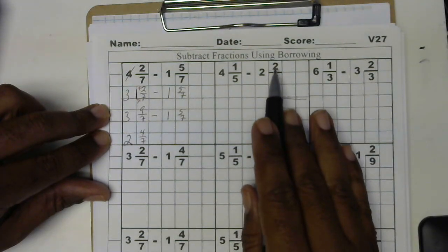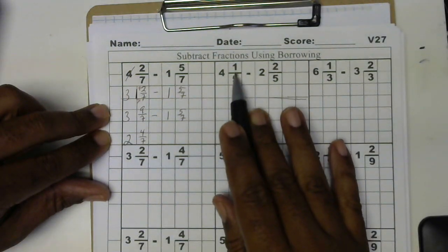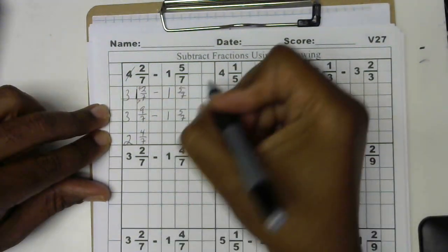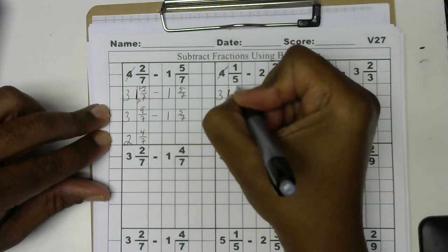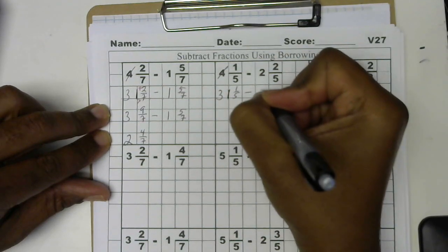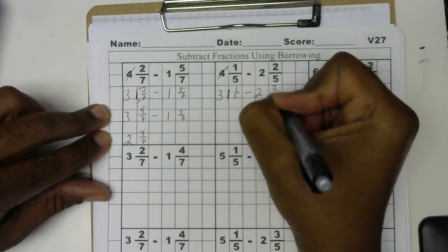On the next problem, we cannot subtract 2 from 1, so we'll need to borrow from the 4. When we borrow from the 4, it becomes a 3. The one that we borrowed goes next to the 1 fifth minus 2 and 2 fifths.